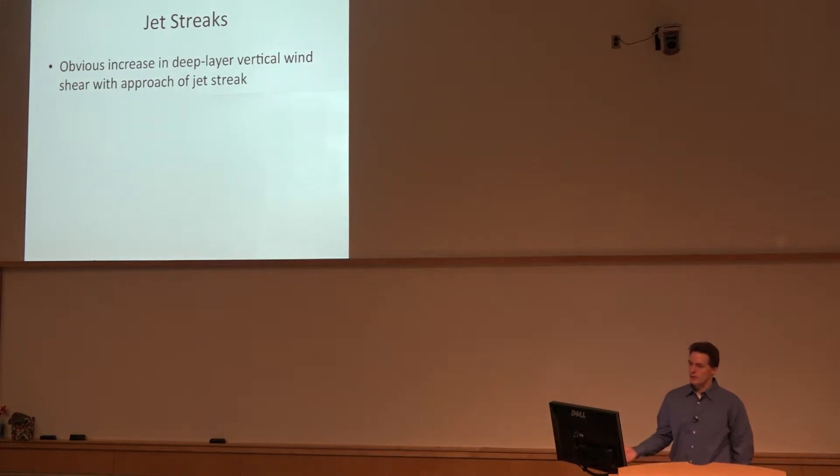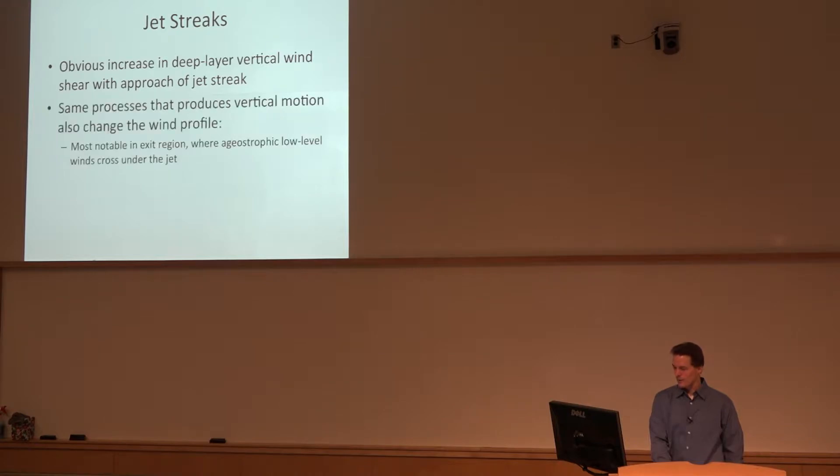It should be somewhat obvious that you will get some increase in deep layer vertical wind shear with the approach of a jet streak. By definition, it's a core of stronger winds approaching, so of course the winds would increase with height. But the processes related to vertical motion with the jet streak are also associated with changes in mass and momentum flux that changes the wind profile.